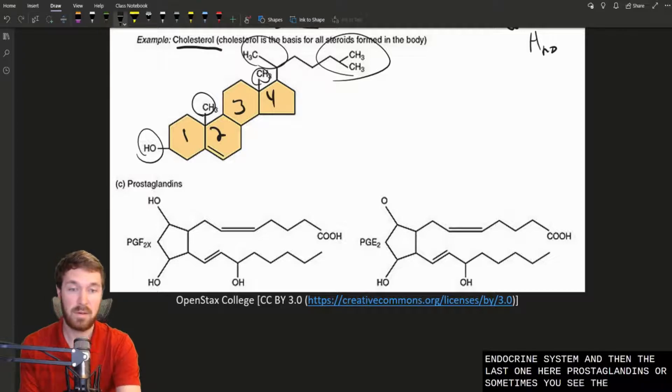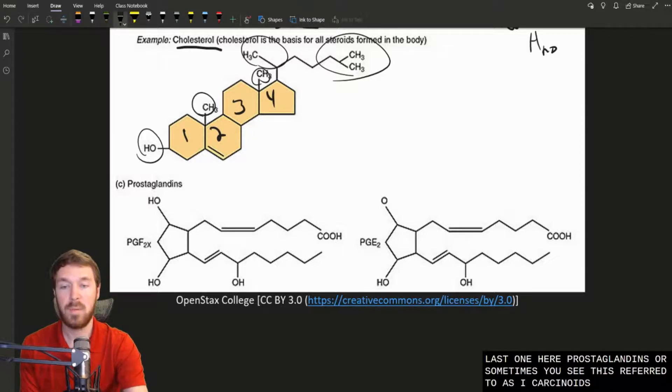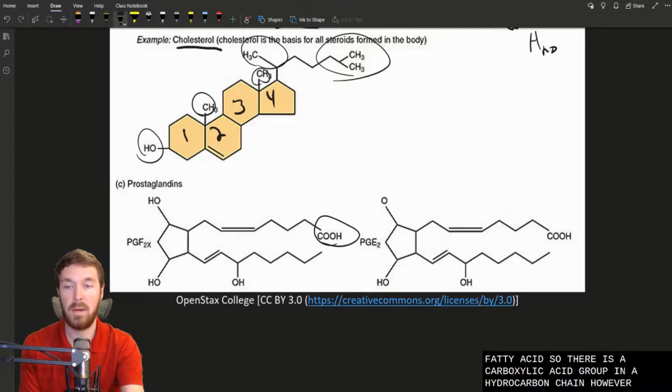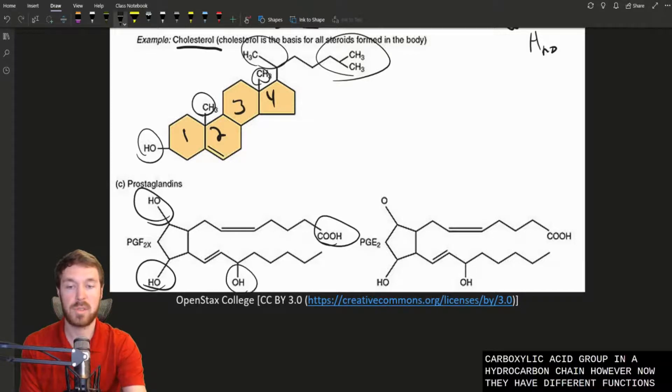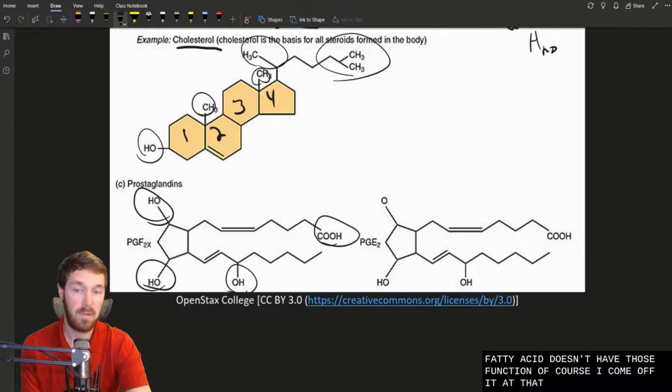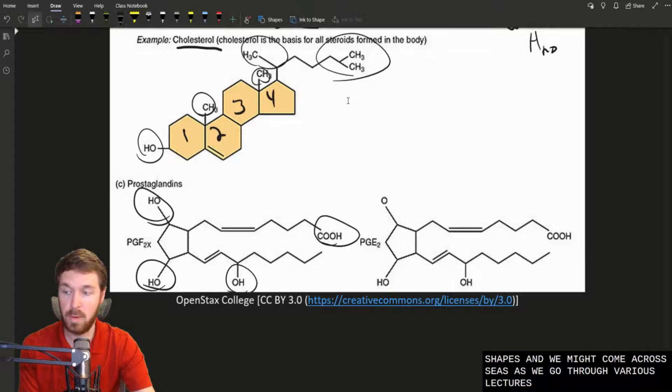And then the last one here are the prostaglandins, or sometimes you see these referred to as eicosanoids. And pretty much they kind of look like a fatty acid. There's that carboxylic acid group in a hydrocarbon chain. However, now they have different functional groups coming off of it where a fatty acid doesn't have those functional groups that come off of it. They can form different shapes. And we might come across these as we go through various lectures as well.